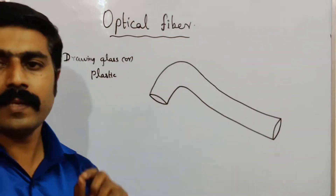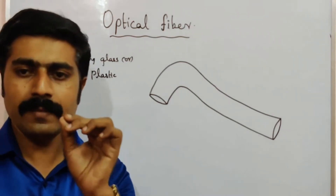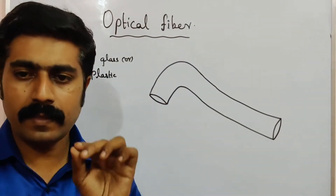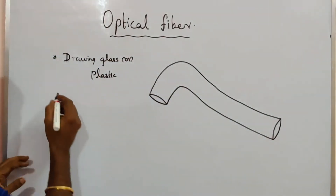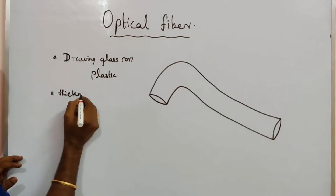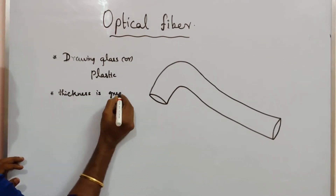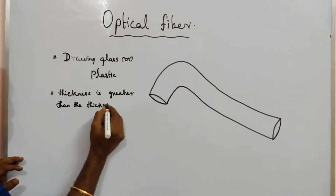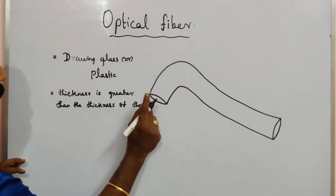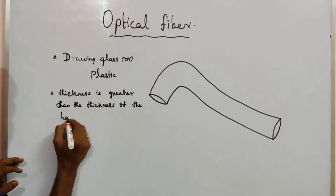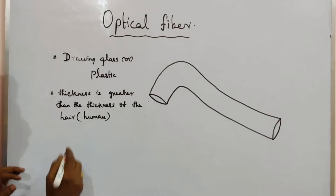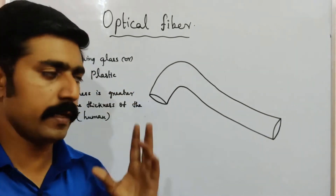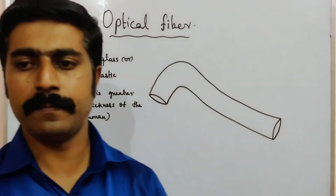The thickness of the optical fiber is a little bit greater than the thickness of a human hair. The thickness is nothing but the diameter of the fiber.